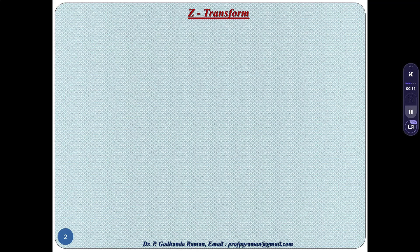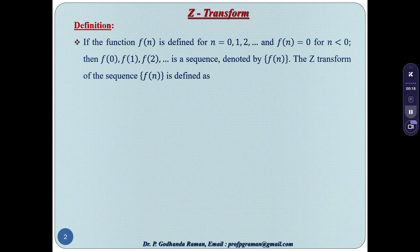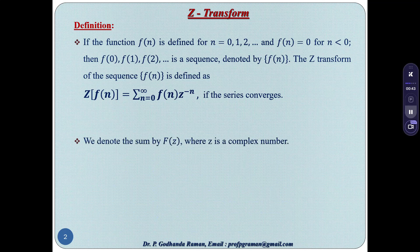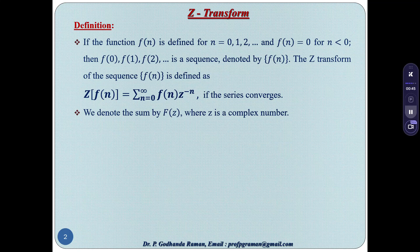First of all, the Z-transform definition. If the function f(n) is defined for n equal to 0, 1, 2 up to infinity, and f(n) equal to 0 for n less than 0, then f(0), f(1), f(2) and so on is a sequence denoted by f(n). The Z-transform of the sequence f(n) is defined as Z{f(n)} = summation n=0 to infinity of f(n) z^(−n), if the series converges. We denote this sum by capital F(z), where z is a complex number. This Z-transform is called the one-sided Z-transform.